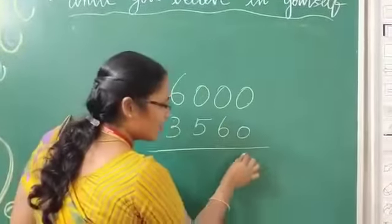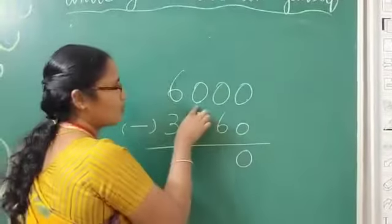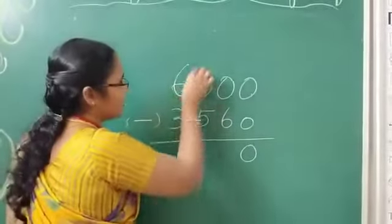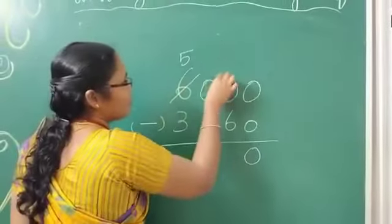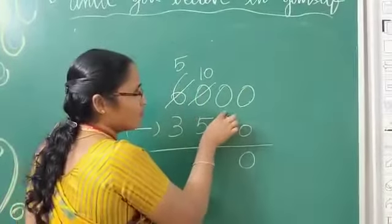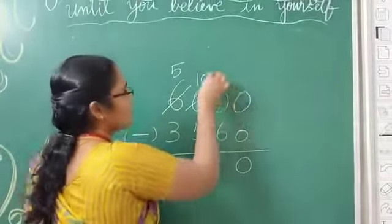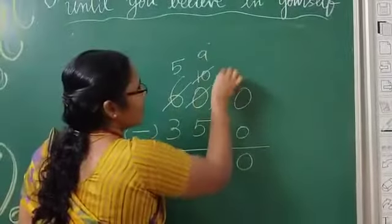0 minus 0? 0. 0 minus 6? We can't do it. Here also 0. So get the help from 6. This will become 5 and this will become 10. Again I am going to give 1 to this number. This will become 9 and this will become 10.